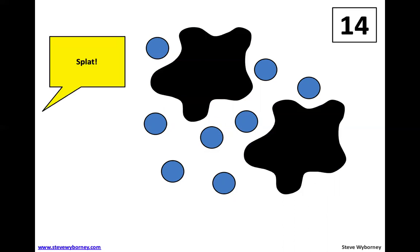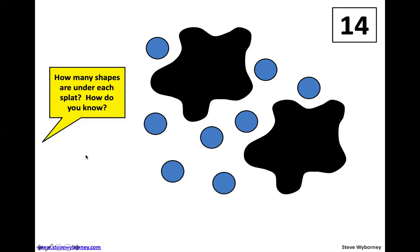Now, usually this is about the time we do a Splat. Now there's two Splats. Here's the key: these Splats each have the same amount of dots underneath them. So when you see two Splats the same color, it means that this Splat has the same amount of dots as this Splat. So instead of asking how many total dots are under the Splat, what I'd like to know is how many dots are under just one Splat? And I want you to think, how do you know that?